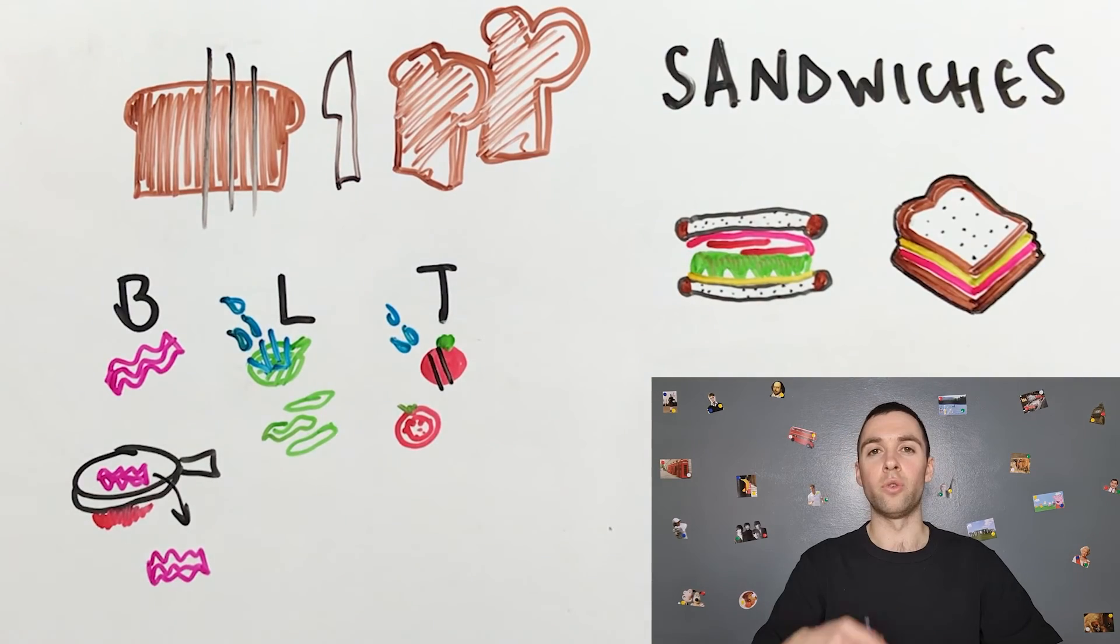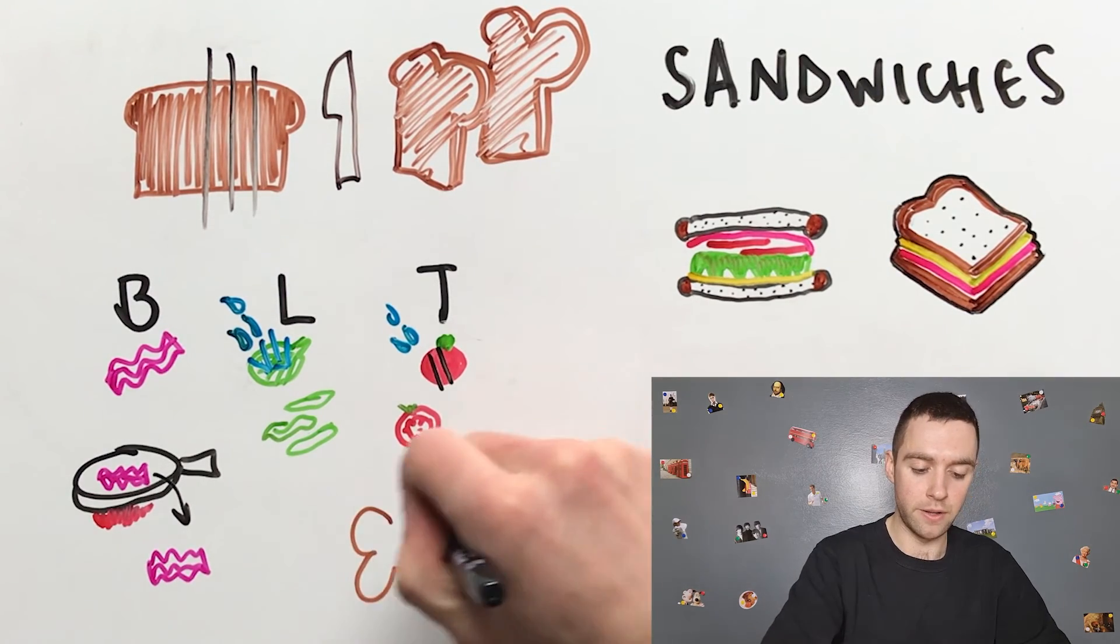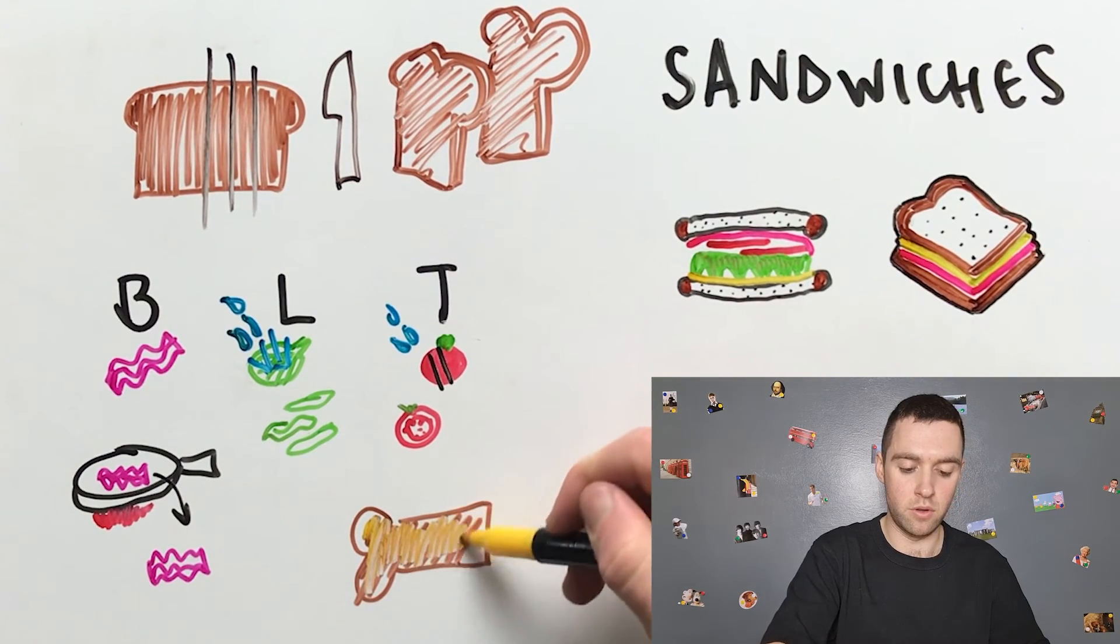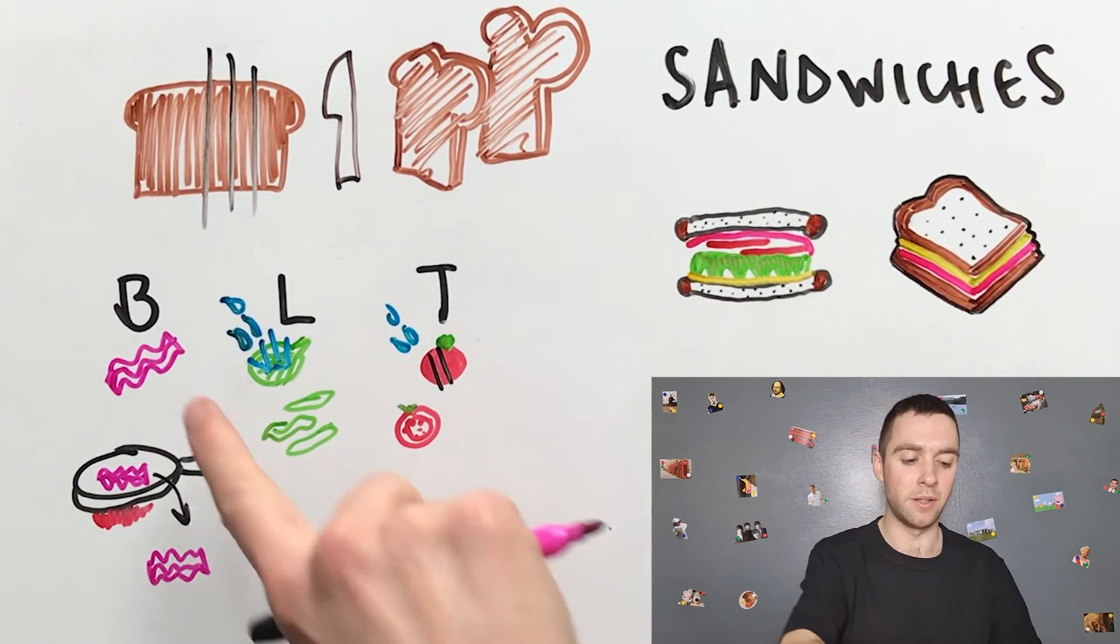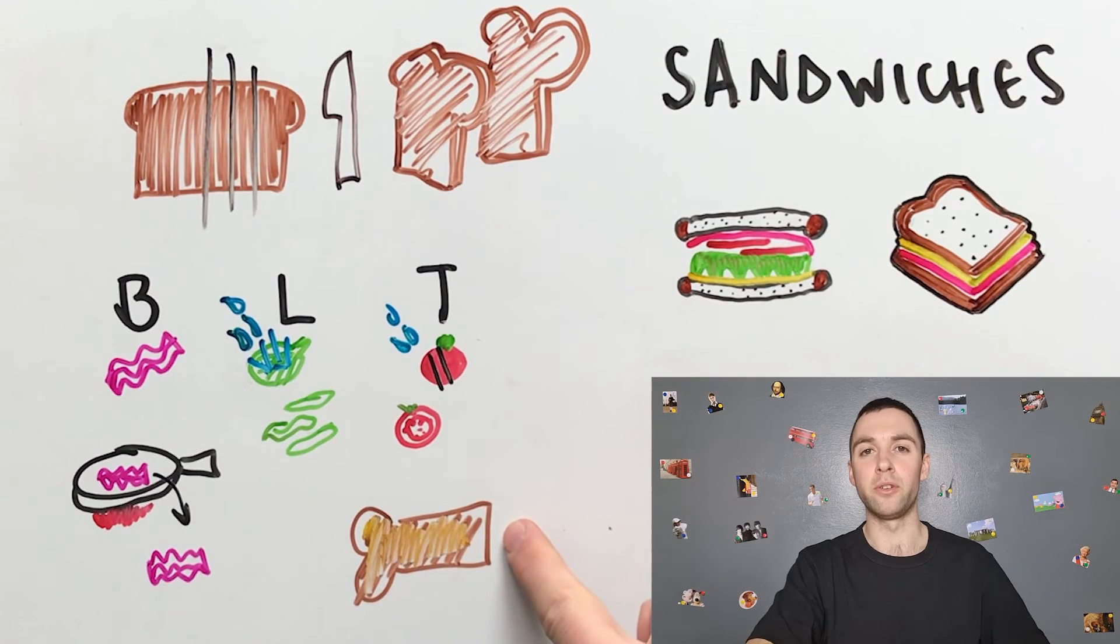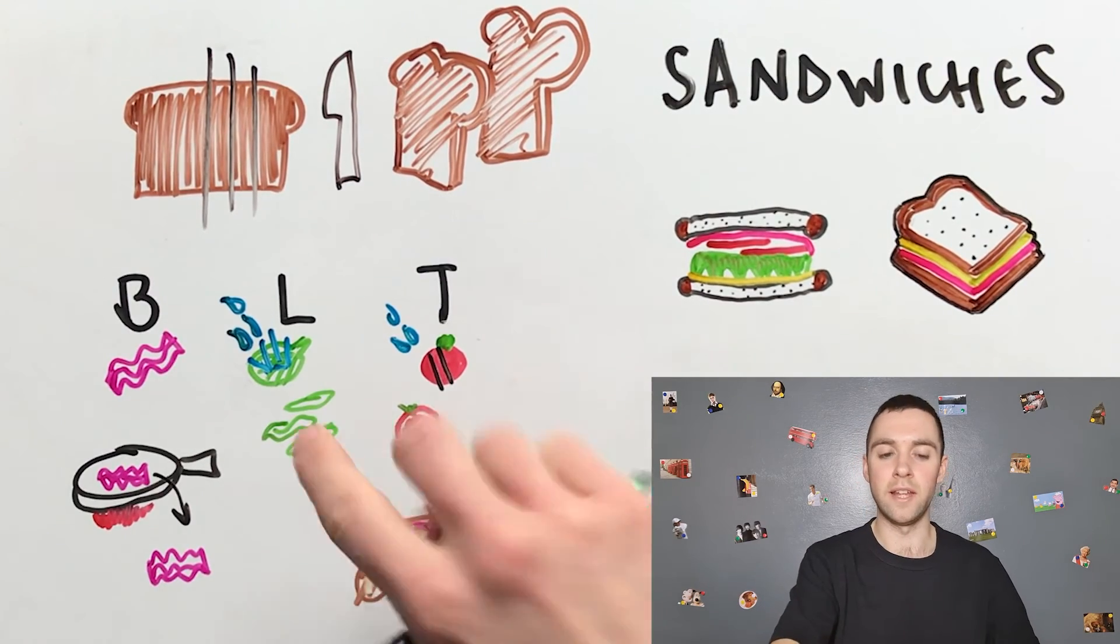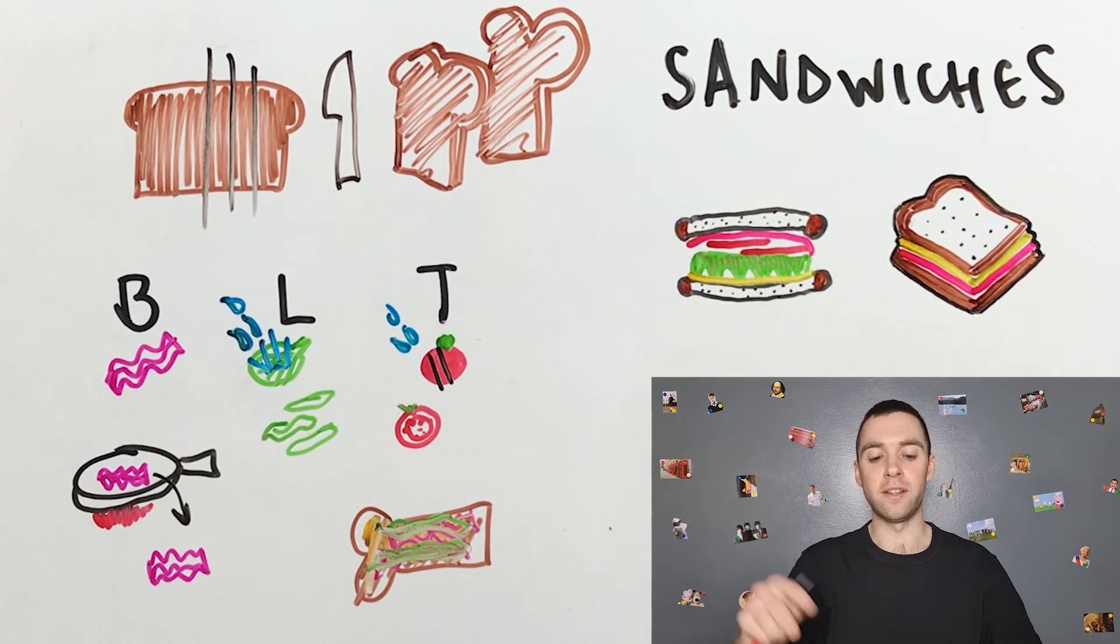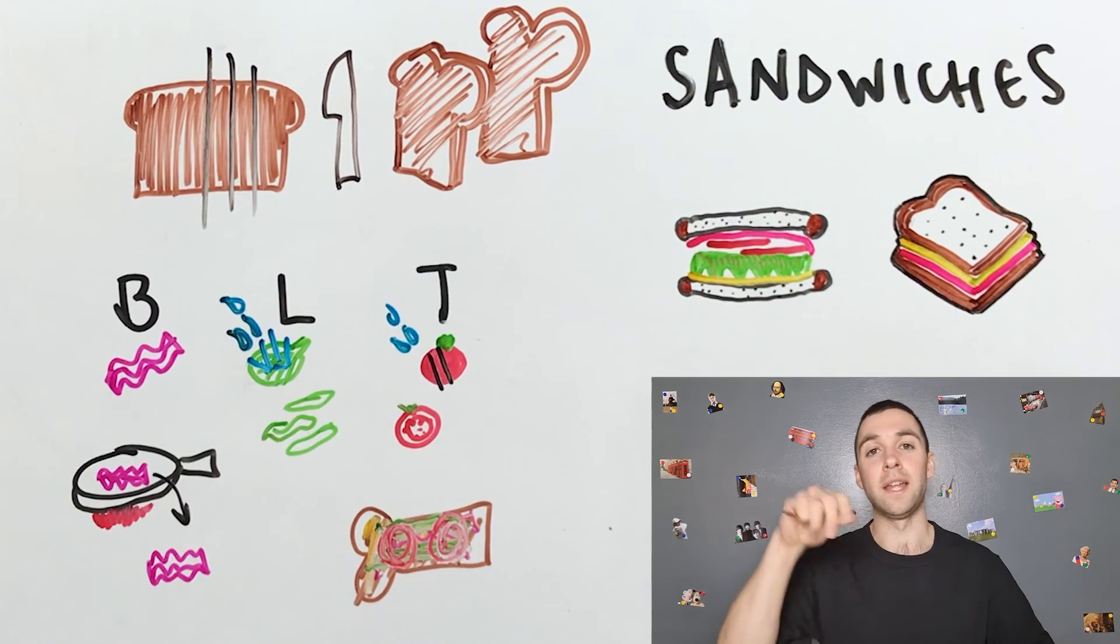So I need to take my first slice of brown bread and spread my butter on my slice of brown bread. Now I put my bacon on my buttered bread. There. Now my lettuce goes on top, and finally my sliced tomato. And now I take my second slice and I put it on top.